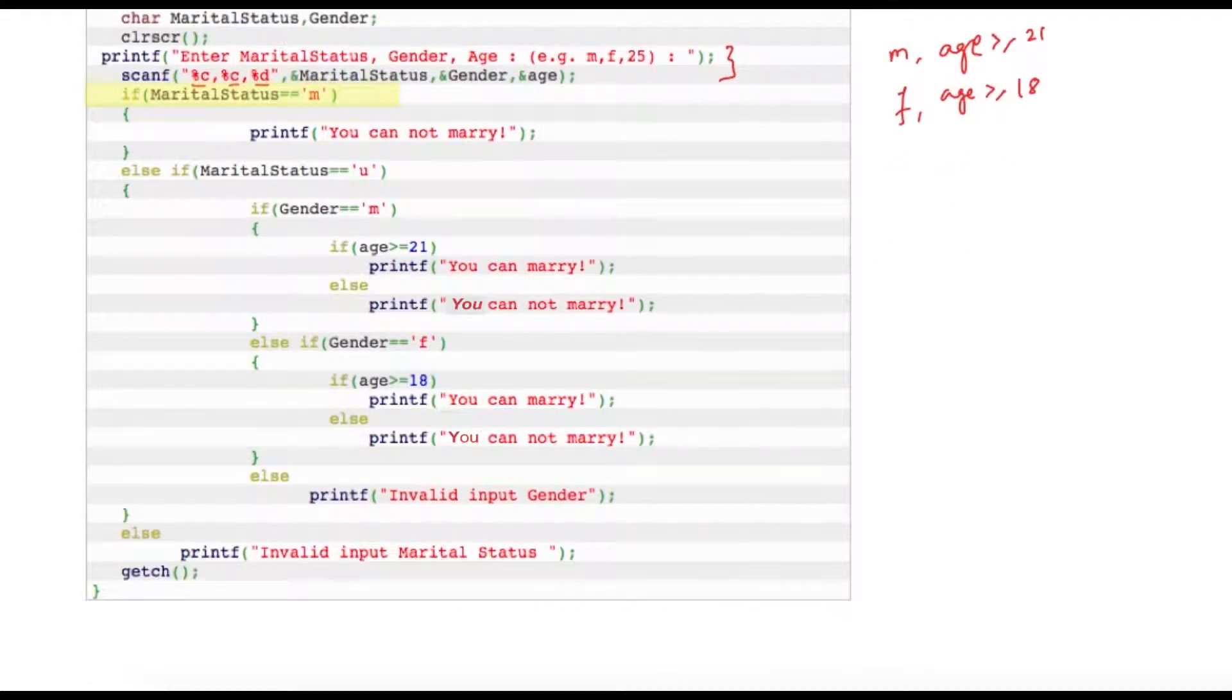Once those inputs are taken from user, I'm writing my first condition: if marital status is equal to M. So user can enter like this: M comma F comma 25. Now why this comma is required? To have a clear separation between those inputs. At the time of scanf I'm writing comma here as well.